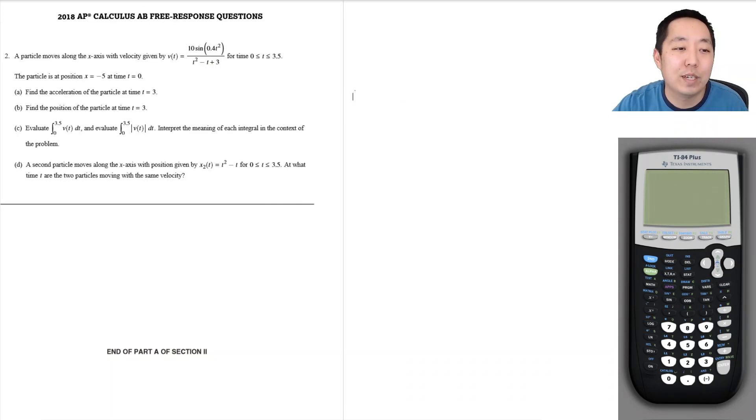Hi all, this is Alan with Bothell STEM Coach and today we are continuing on with the AP Calculus AB free response questions from 2018 and here's number 2. So a particle moves along the x-axis with a velocity given by that and the particles at position x equals negative 5 at times t equals 0.